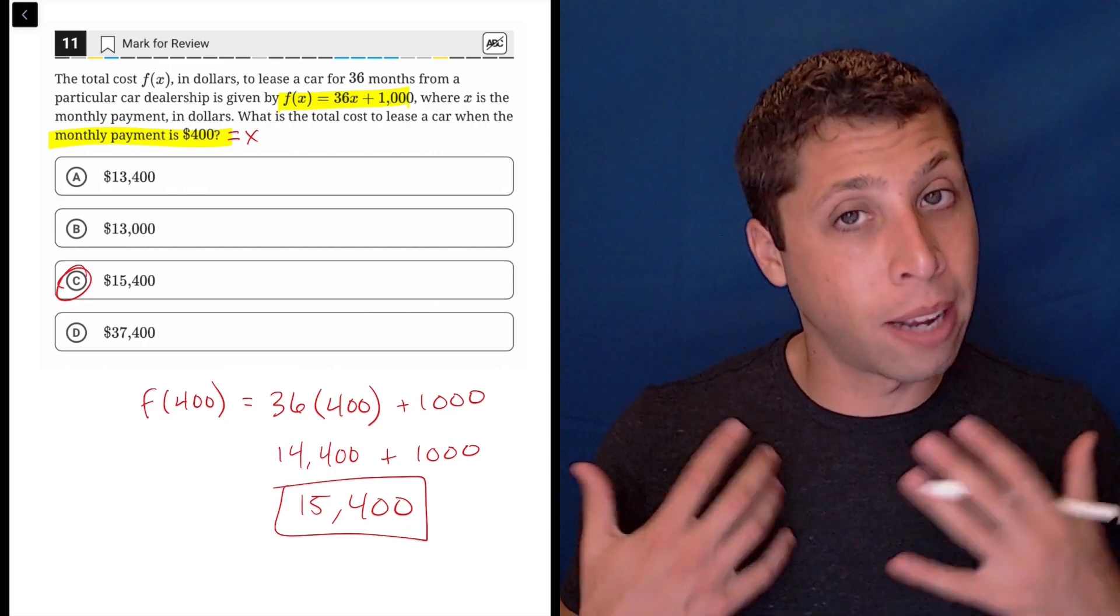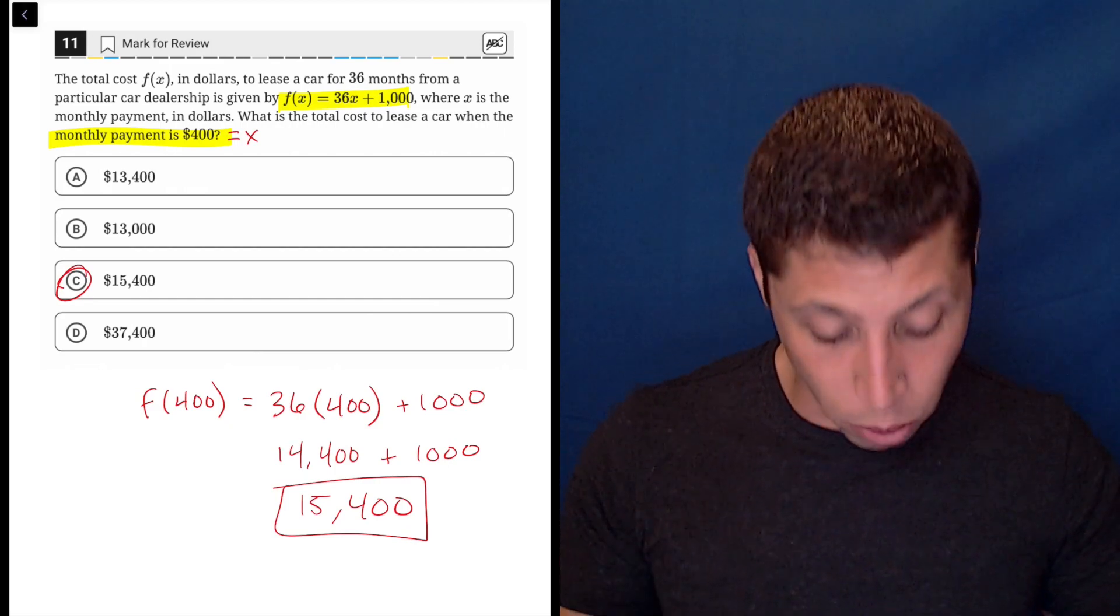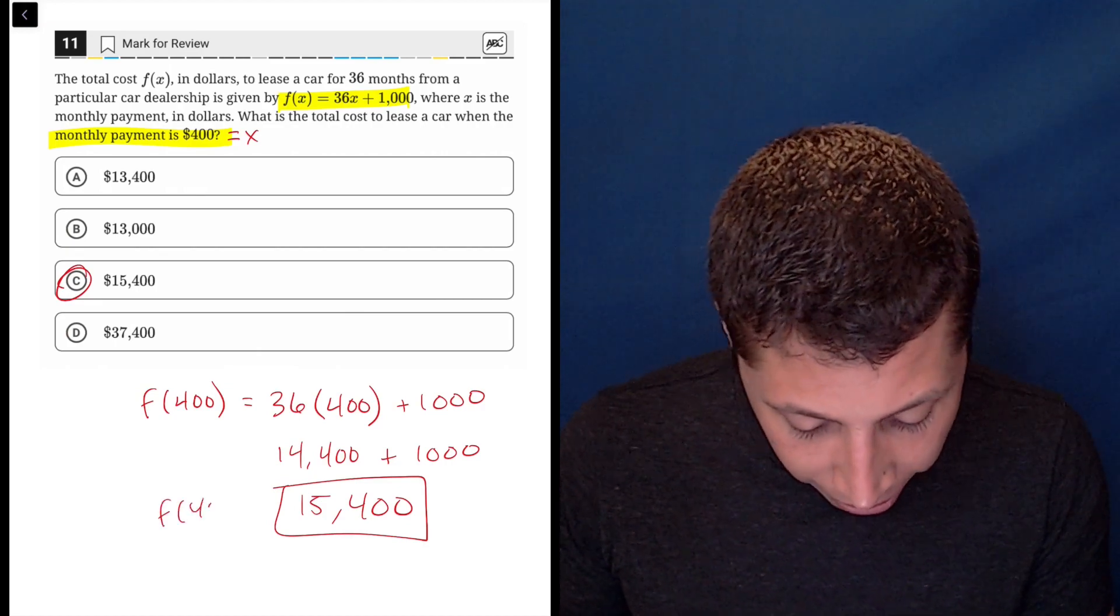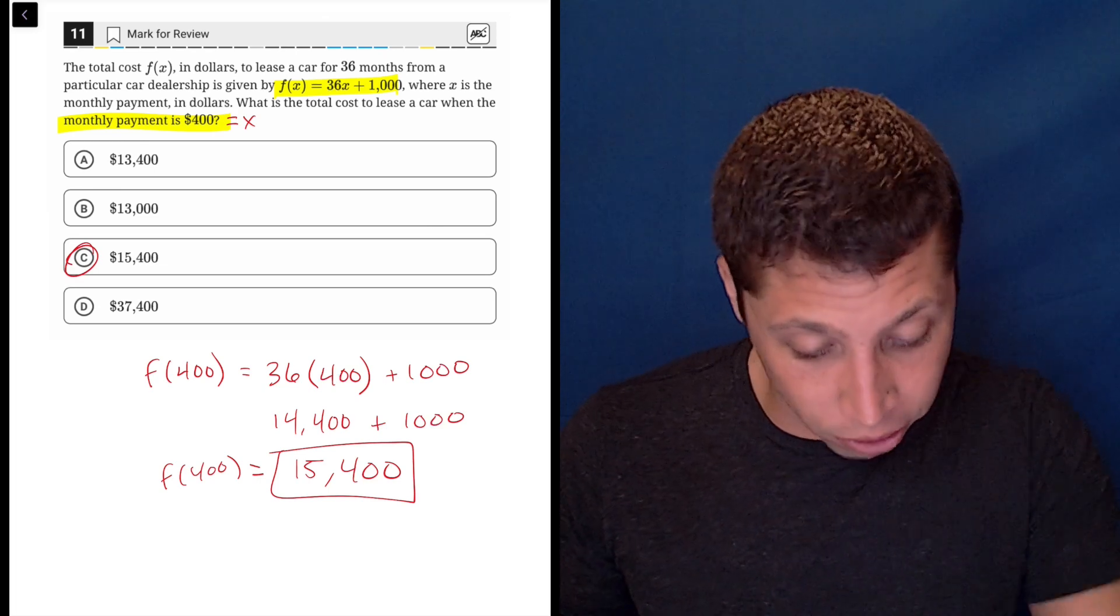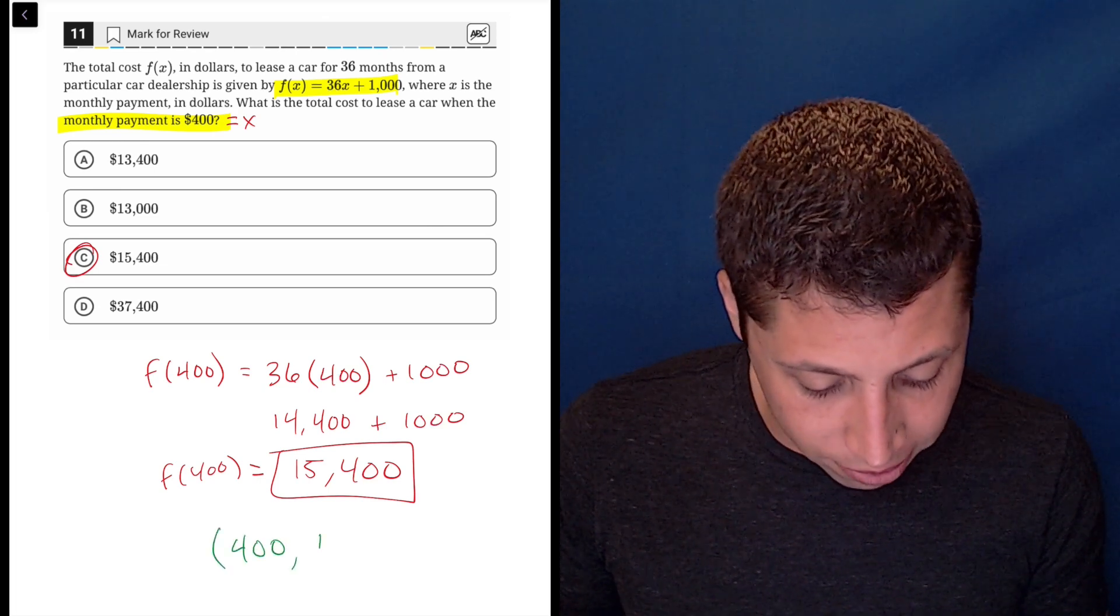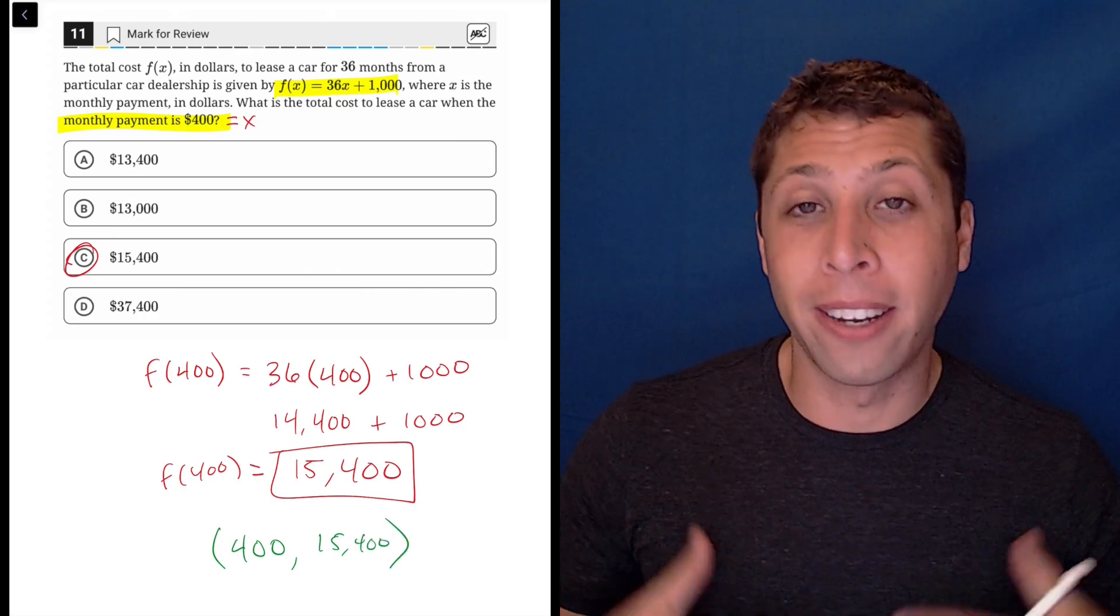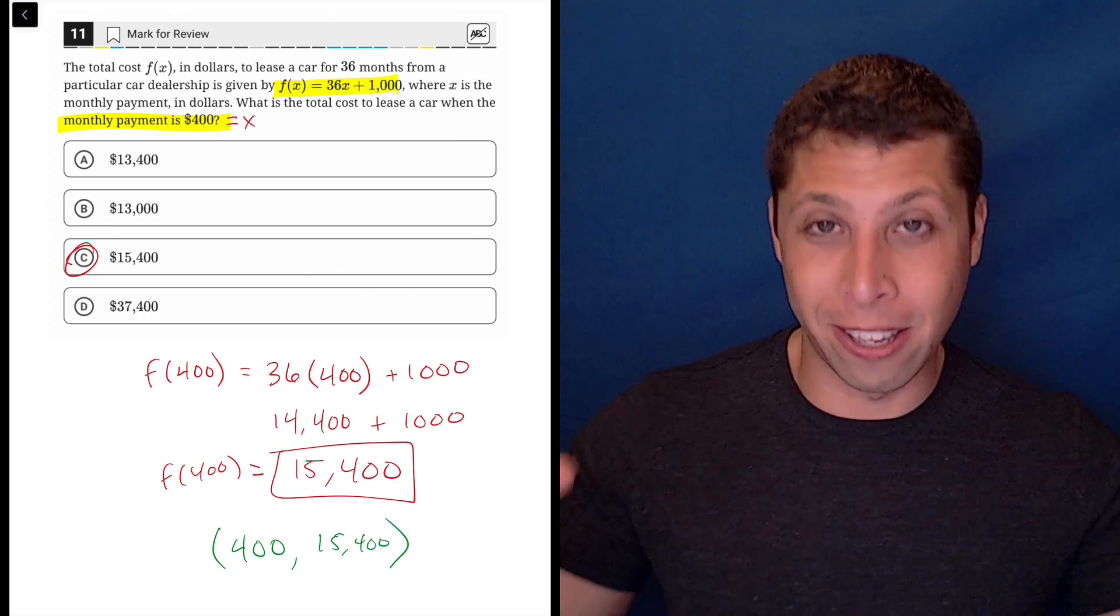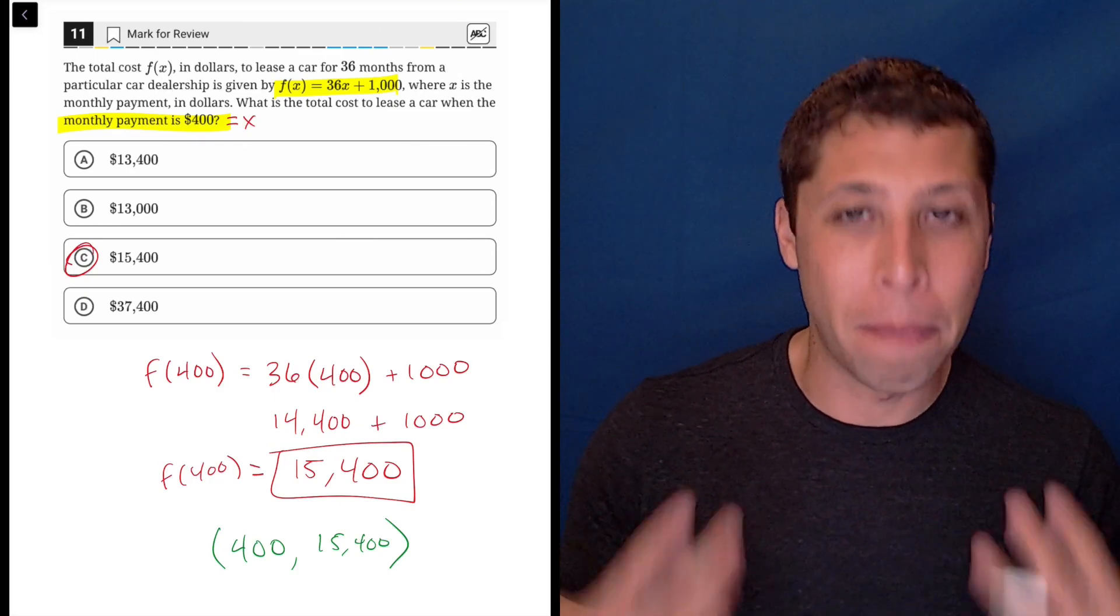Function notation, like I've said, is just another way of talking about X and Y coordinates. So this point, F of 400 equals 15,400 is really just another way of writing the point, 400X, 15,400 is the Y. It's just a point on a graph, like all the points that you've seen before, it's just written with a different notation or different language, but it means the same thing.